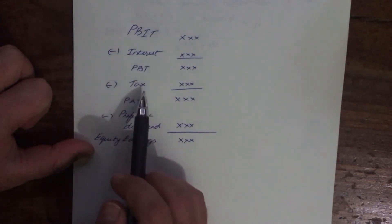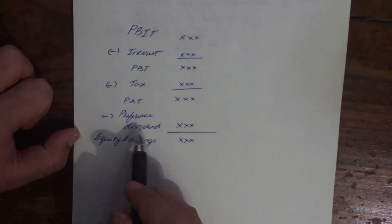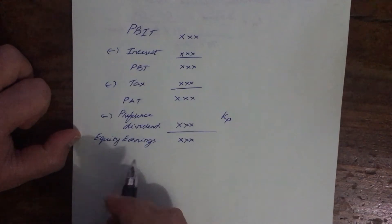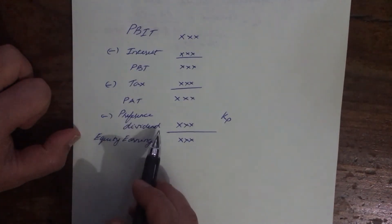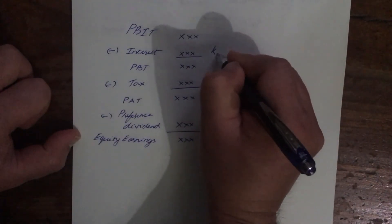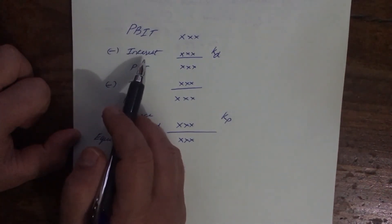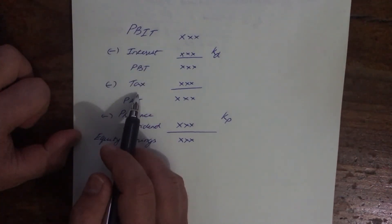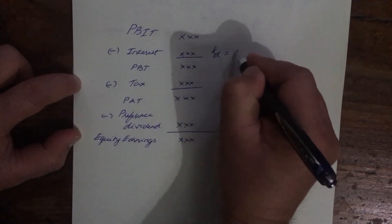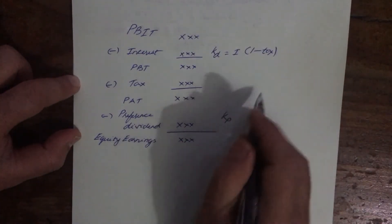Equity earnings is the profit available to equity shareholders. For preference dividend — when finding out KP — we don't need to make any tax adjustment because preference dividend is deducted after tax. But for KD, cost of debt or cost of debenture, we deduct interest first and then only tax. So that's why when you calculate KD, we always have to make tax adjustments.